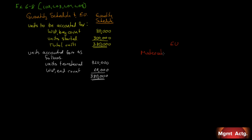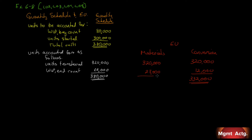Now we're going to do our equivalent units, listing them in terms of cost categories. We're given two: materials and conversion costs — remember, conversion costs are direct labor and overhead. Of the units transferred, it's the same units right across: 320,000 for both. For the work in process ending count of 60,000 partially completed, the ending inventory is 45% complete with respect to materials, which is the same as having 27,000 fully complete units for materials. With conversion, we're told 20%, which is the same as 12,000. This gives us 347,000 equivalent units for materials and 332,000 equivalent units for conversion costs.